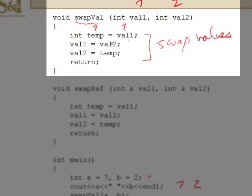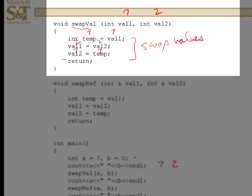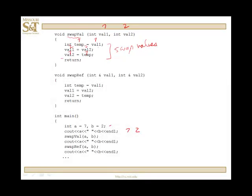This was 7, this is now 7. At this point, right here, val1 is what? It's 2. Val2 is 7. So it appears they swapped values, correct?